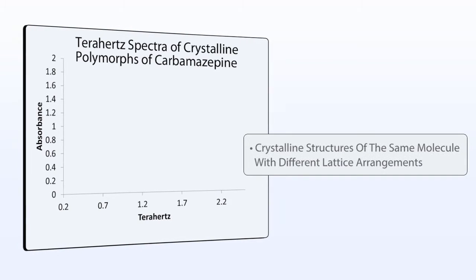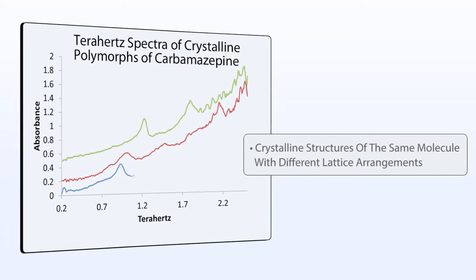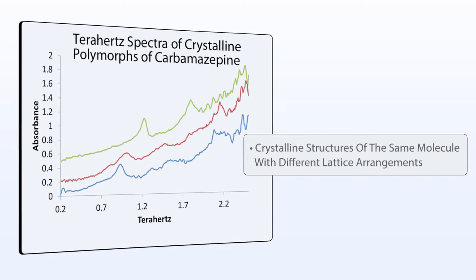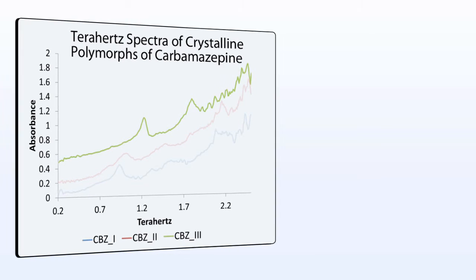Polymorphs are crystalline structures of the same molecule with different lattice arrangements. The terahertz spectra of polymorphs often exhibit unique fingerprints, as shown here for the API carbamazepine.